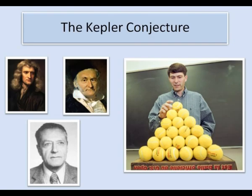The next breakthrough came in 1953 when László Tóth showed that the problem could be reduced to a finite albeit enormous set of calculations. And at the beginning of the 1990s Thomas Hales showed that the problem could be solved by minimising a certain function of 150 variables.